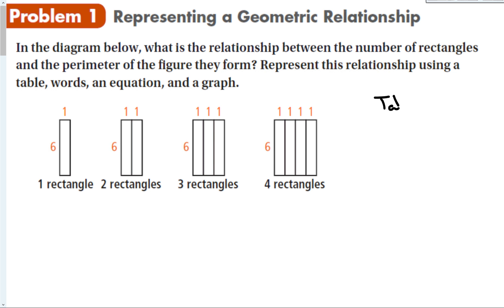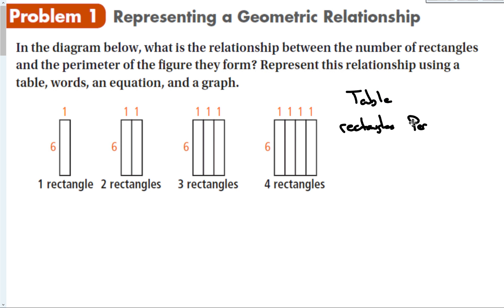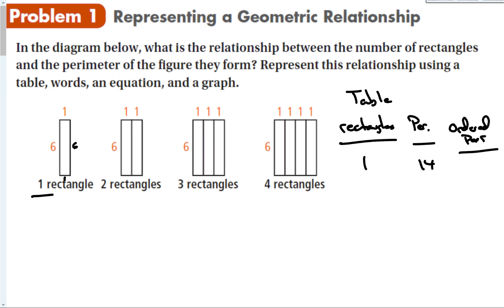Let's make a table with columns for number of rectangles, perimeter, and ordered pair. For one rectangle, if we add up all the sides, we get a perimeter of 14. So our ordered pair is (1, 14).